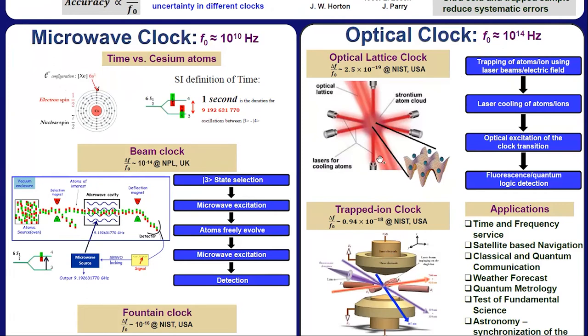In lattice clock, two counter-propagating lasers are used to generate a potential profile that looks like an egg cutter. So there are several local minima where an atom can be trapped. In a trapped ion clock, charged particle is trapped using an oscillating electric field. Due to the electric field, charged particle experiences a force in such a way that there is three-dimensional confinement of charged particle.